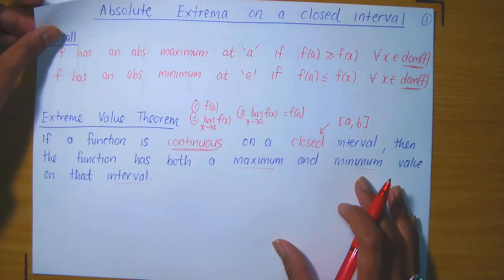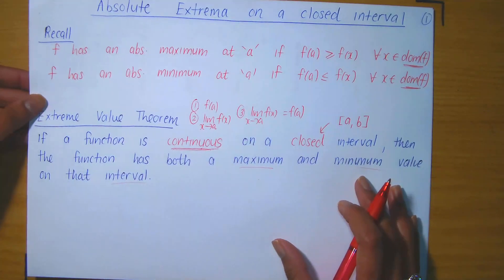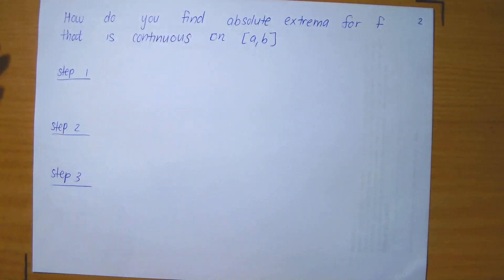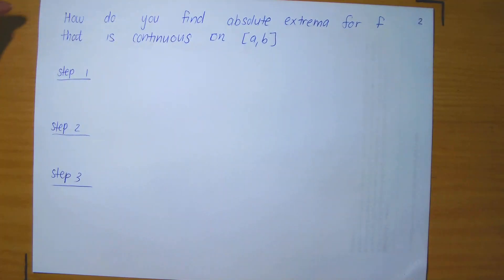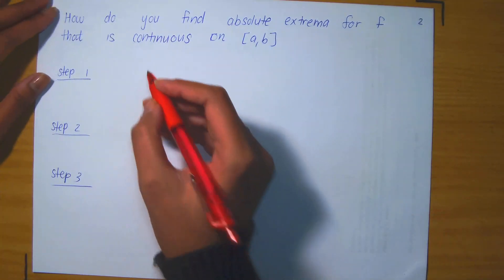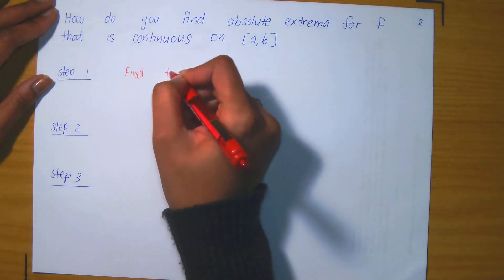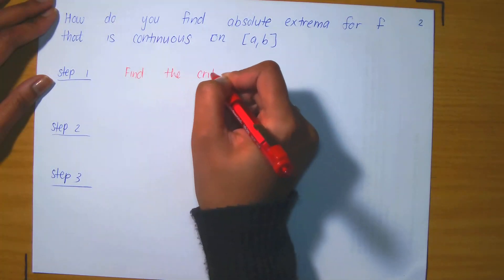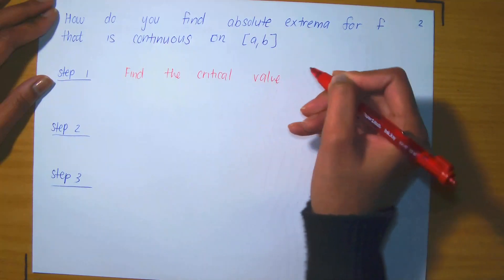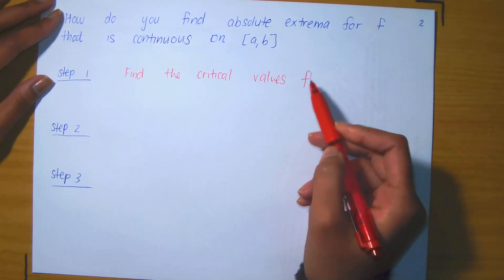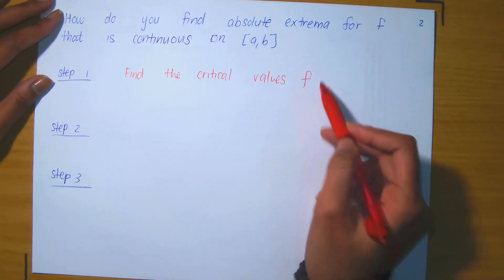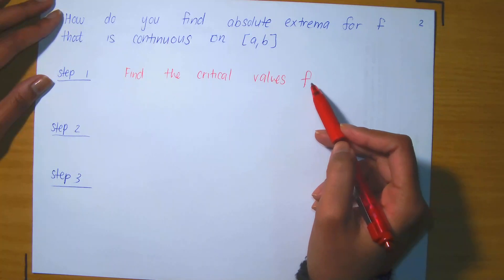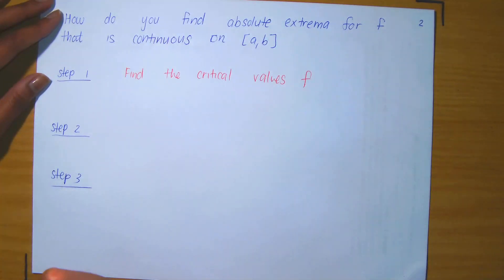How do we find the absolute extrema on a closed interval? Suppose you have a function that is continuous on some closed interval [a, b]. Step one is to find the critical values of your function. You compute the derivative and find all x values for which f prime is undefined or for which f prime equals zero.